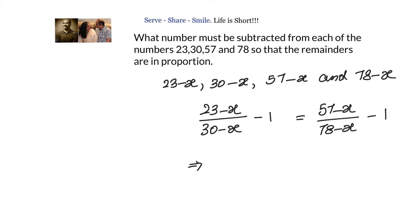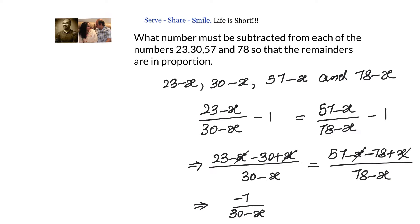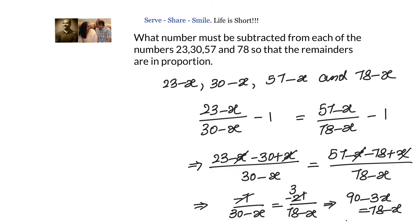Subtracting 1 from both sides gives (23 − x − 30 + x) / (30 − x) = (57 − x − 78 + x) / (78 − x). The x terms cancel in the numerators, leaving −7 / (30 − x) = −21 / (78 − x). Cross-multiplying: 7 goes 3 times, giving 90 − 3x = 78 − x.